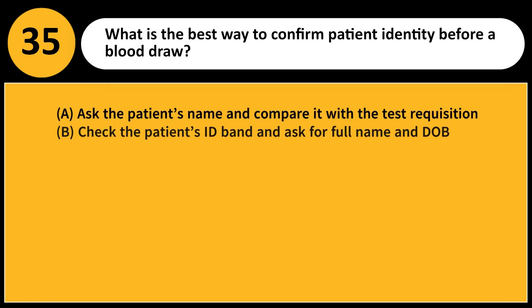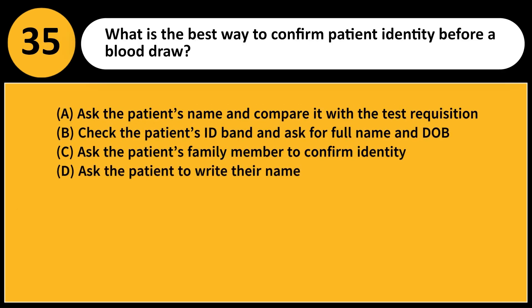What is the best way to confirm patient identity before a blood draw? A. Ask the patient's name and compare it with the test requisition. B. Check the patient's ID band and ask for full name and date of birth. C. Ask the patient's family member to confirm identity. D. Ask the patient to write their name. Answer: B. Verifying the patient's ID band and confirming with them ensures accuracy.